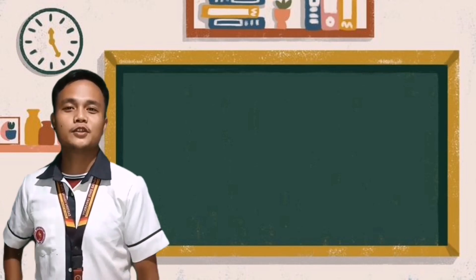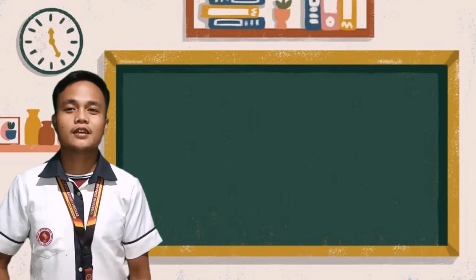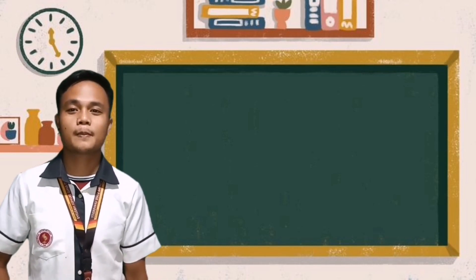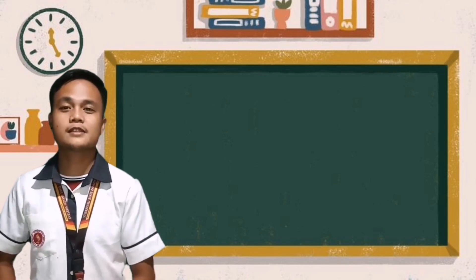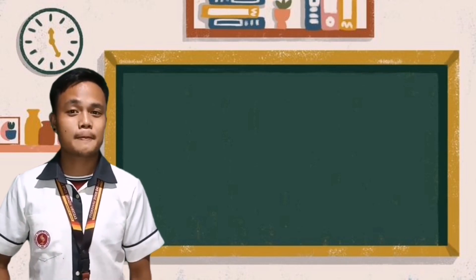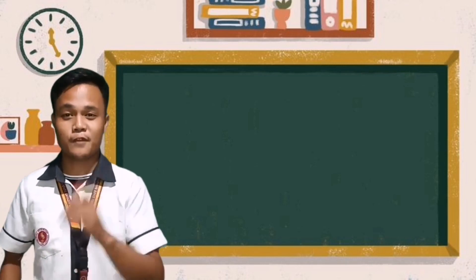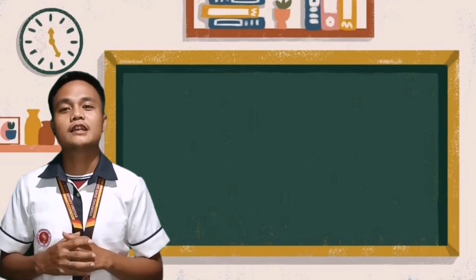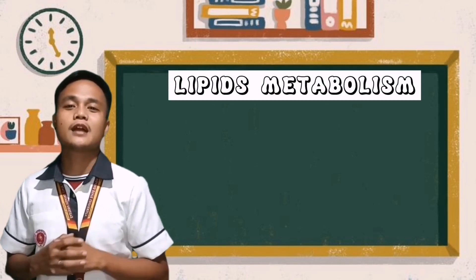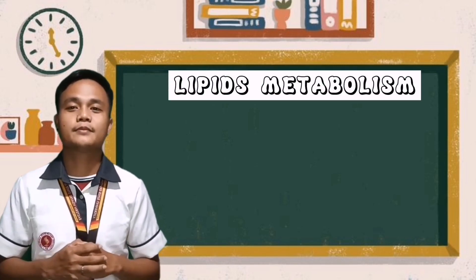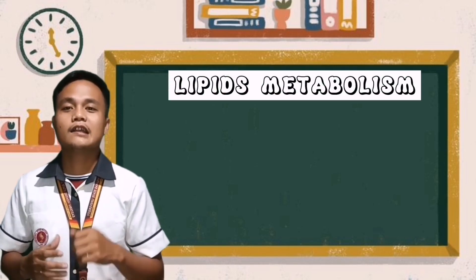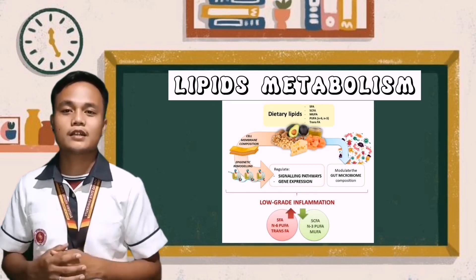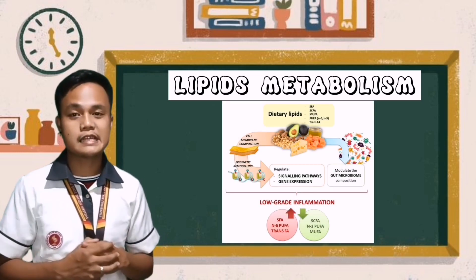Before I move on to the new topic, do you still remember our last discussion? If yes, what is it all about? Very good! Our last topic is all about lipid metabolism. We learned that dietary lipids are digested in the stomach and small intestine. Because dietary lipids are hydrophobic, they must be emulsified before breakdown.